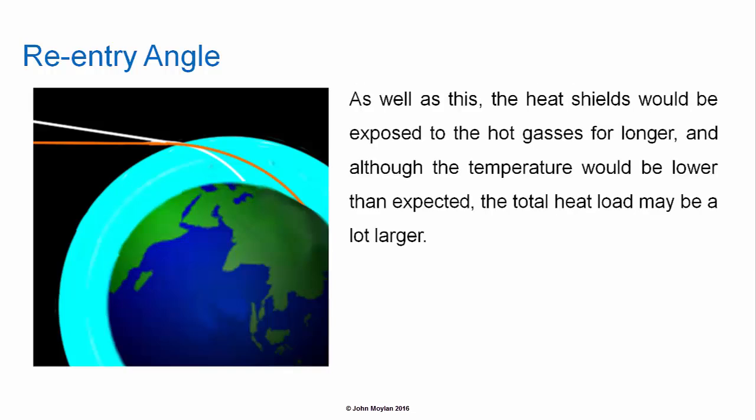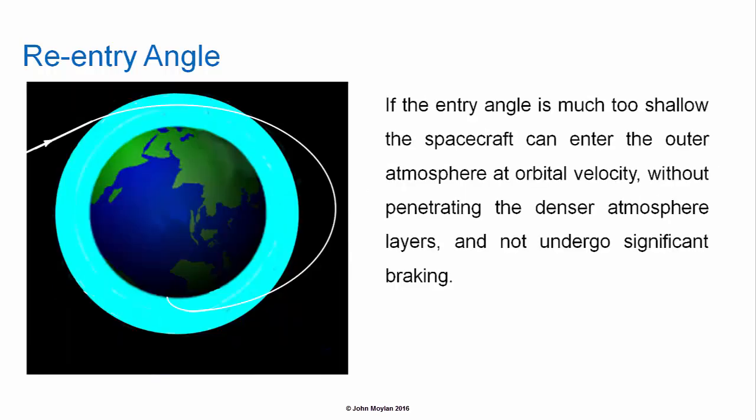Heat shields are designed to work for a certain amount of time, and if the spacecraft decelerates more slowly it spends a longer time exposed to the hot gases, which could cause failure of the heat shield. If the re-entry angle is much too shallow, the spacecraft can enter the outer atmosphere at orbital velocity without penetrating the denser atmosphere layers and not undergo significant braking.